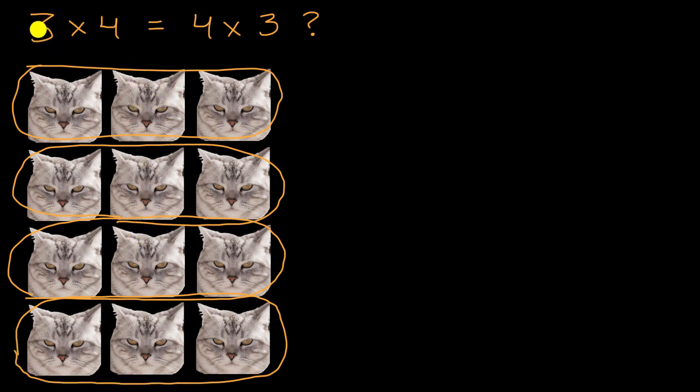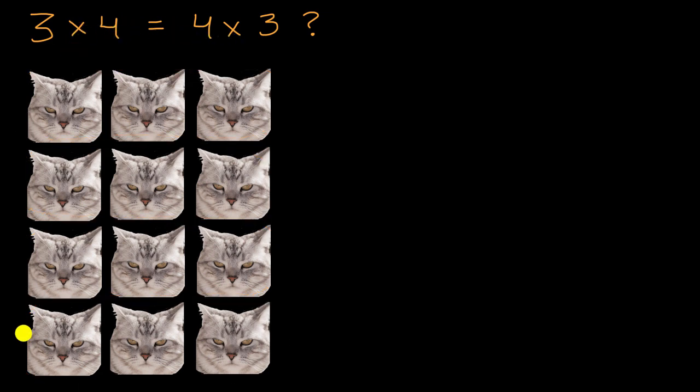So based on that, if you think of the first number as groups of the second number, well, it seems like the order doesn't matter. Another way you could think about it is, here you have four rows of three angry cats.